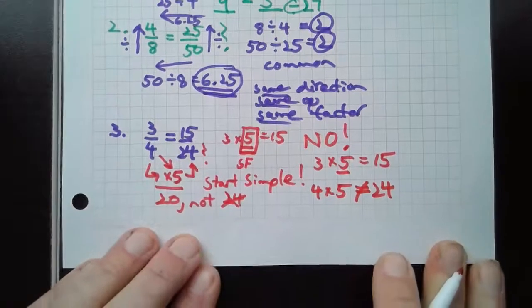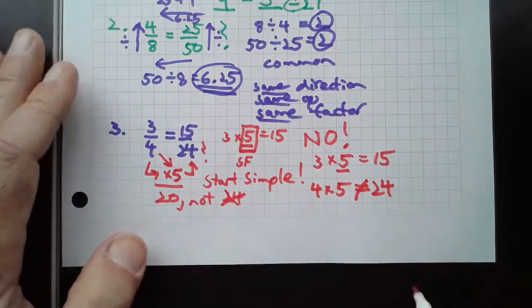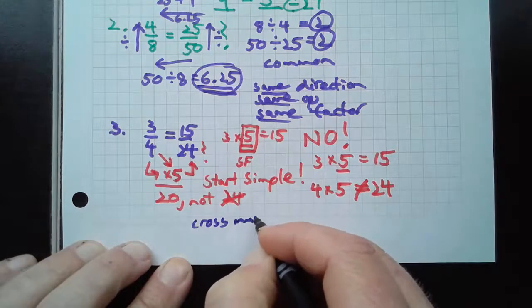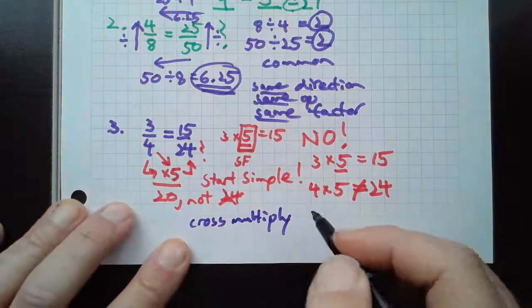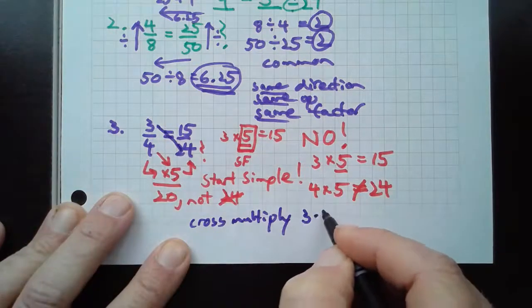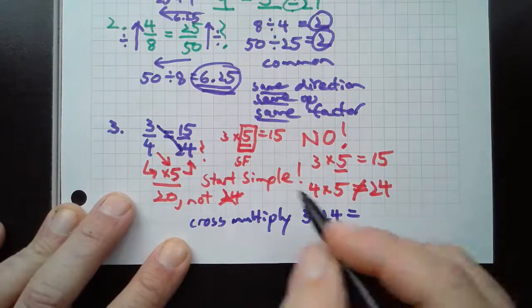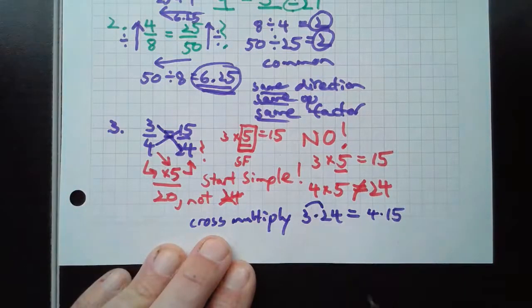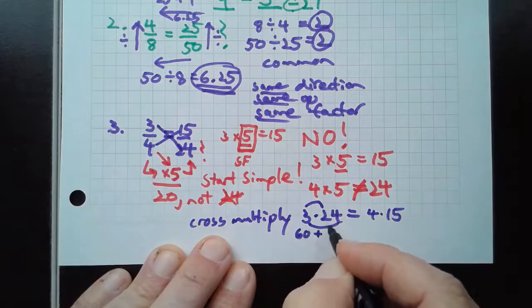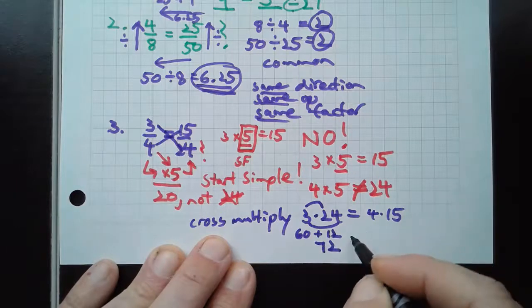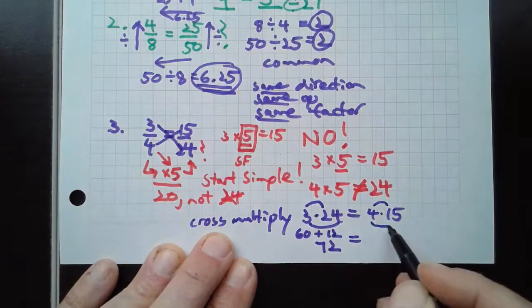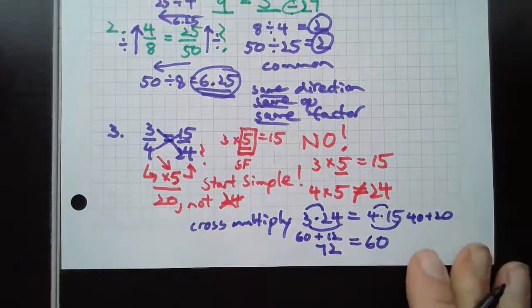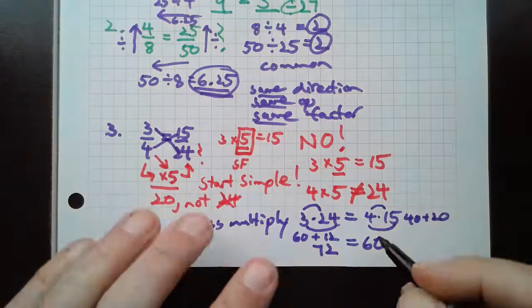We can also prove this by cross-multiplying. We'd be asking, does 3 times 24 equal 4 times 15? Well, there's 3 times 20, which is 60, plus 12 is 72. 4 times 10 is 40, 4 times 5 is 20, 40 plus 20 is 60. So here's a simple question for you. Is 72 the same thing as 60? No!